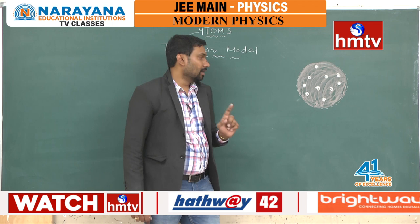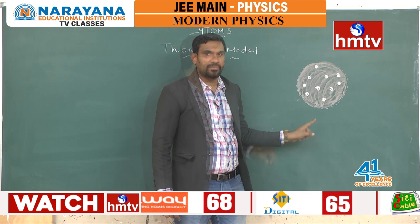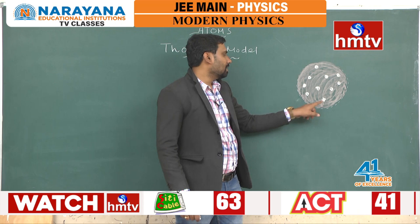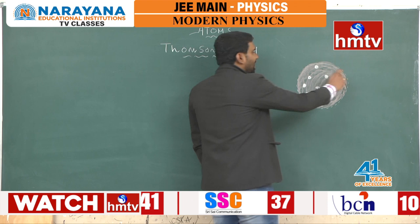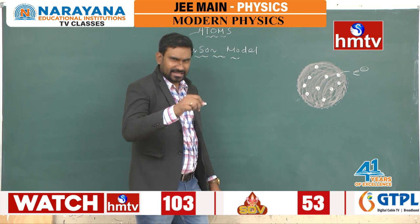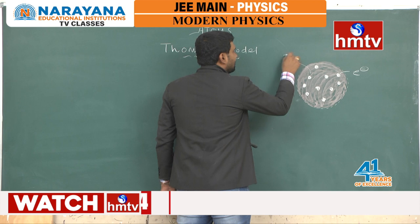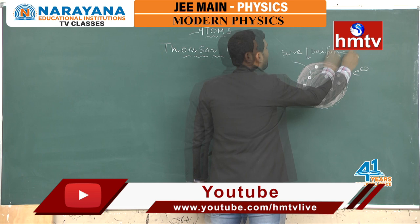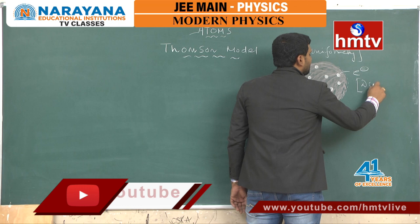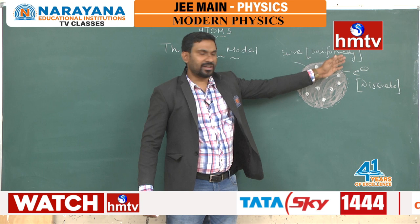The reddish shade you are seeing represents the uniform distribution of positive charges. The negative charges, or electrons, are ingrained in this in a discrete fashion — like seeds on a fruit. That is why it is famously called the plum pudding model. So, positive charges are uniformly distributed, and the distribution of negative charges is discrete.